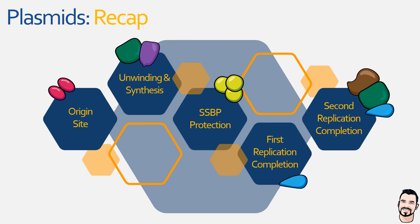These two plasmids then remain in the cell until it divides. There are various systems in place to ensure plasmids end up in the correct daughter cell during cell division, however that won't be covered in this video.